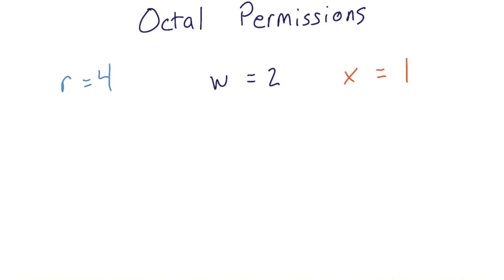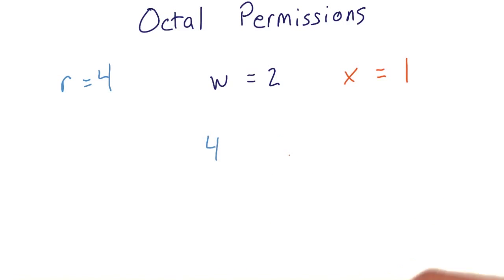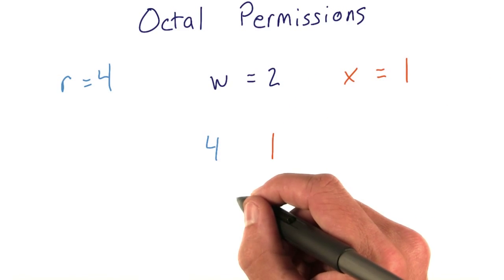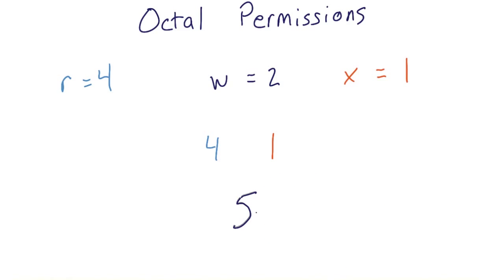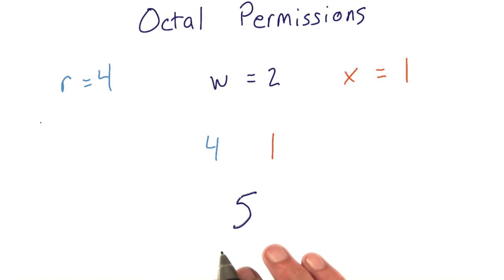For example, if we wanted to give read and execute permissions, we'd have values of 4 and 1, which when added together, gives us a final value of 5. To represent read and execute permissions, you would use the number 5.